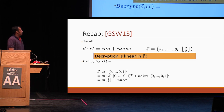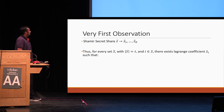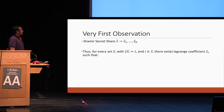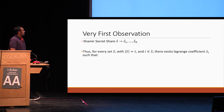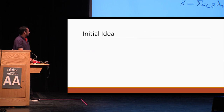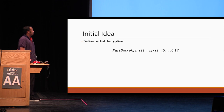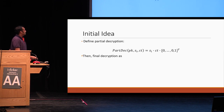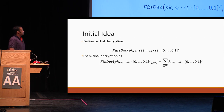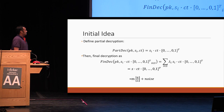Since decryption is linear in S, this immediately gives rise to an initial idea: maybe we can secret share the secret key S into shares S1 through SN. In Shamir secret sharing, if I have any set of size T, there will exist Lagrange coefficients such that the secret S is just a lambda linear combination of these shares. So the initial idea is to define partial decryption as S_i times CT times [0,0,1]^T where S_i is the share, and define final decryption as the lambda linear combination of these partial decryptions. When you simplify, you just get S times CT times [0,0,1]^T, which gives M times Q/2 plus noise. It seems like we get correctness.